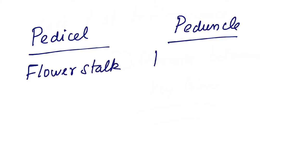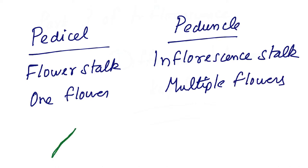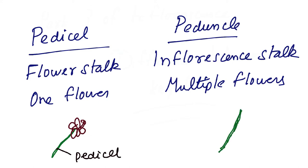The difference between a peduncle and a pedicle: a peduncle is basically the stock of an individual flower, whereas the pedicle is the stock on which all the flowers are — that's the inflorescence stock, also called the inflorescence axis. So the pedicle is meant for one flower, and the peduncle is meant for multiple flowers. When multiple flowers develop on a single axis, we call it an inflorescence — that's the peduncle. When a single flower develops, that's called the pedicle.